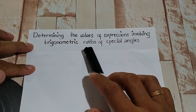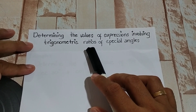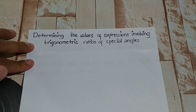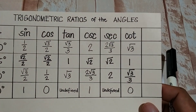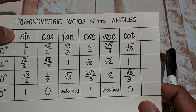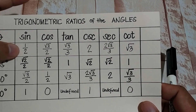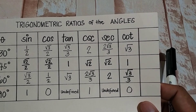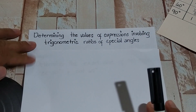Going back to trigonometric ratios, we have 6: sine, cosine, tangent, cosecant, secant, and cotangent. Now, as we determine or evaluate the values of an expression, we need this trigonometric table of ratios of the angles — just like when combining sine 30 degrees with cosecant 30 degrees, that is one half plus two. So using the table of values in this activity, let us try to consider this problem.